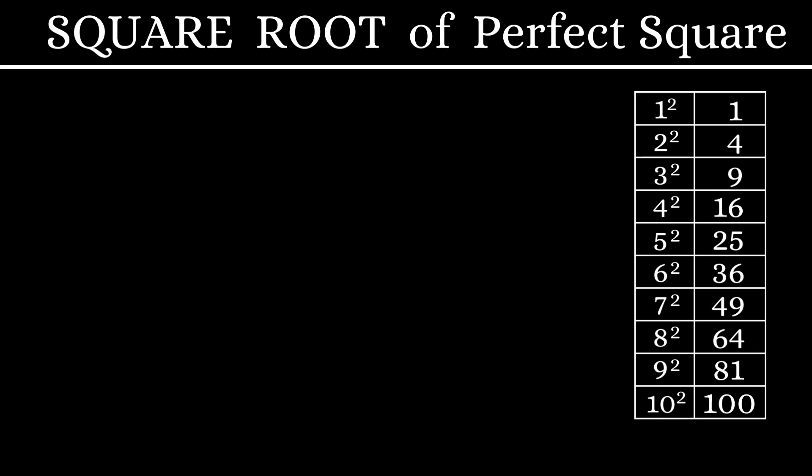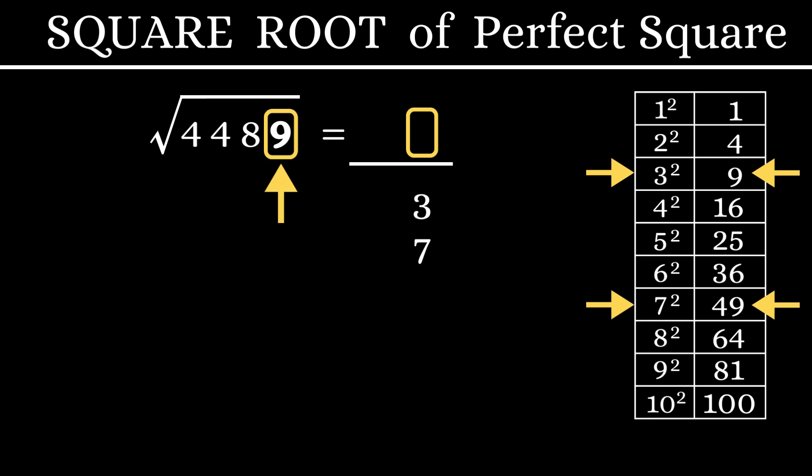With this understanding, we will dive into our first example: 4,489. In our technique, we will first consider the units digit 9. From our table, we can say that the units digit of the answer should be either 3 or 7. Only then the square will be ending in a 9. So, let's keep these two options.